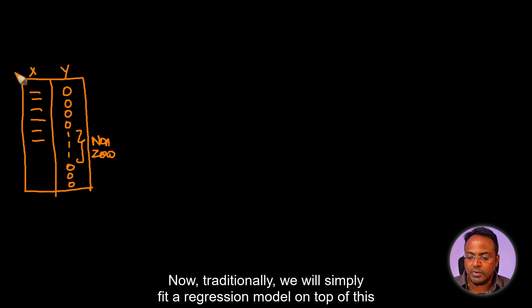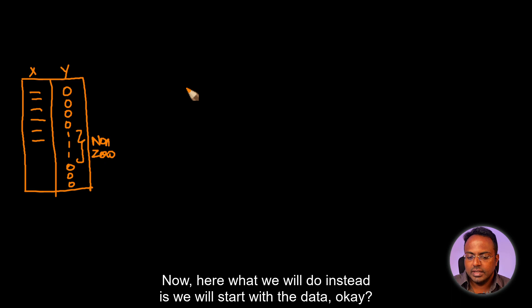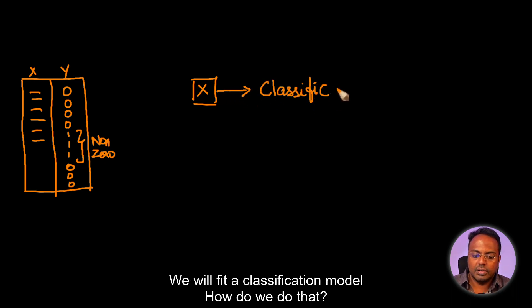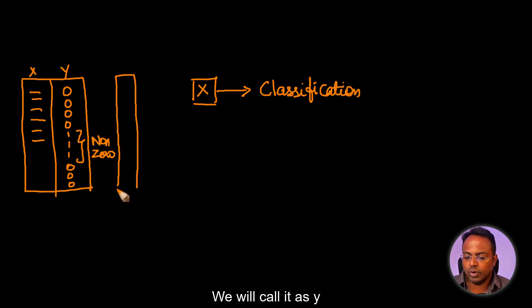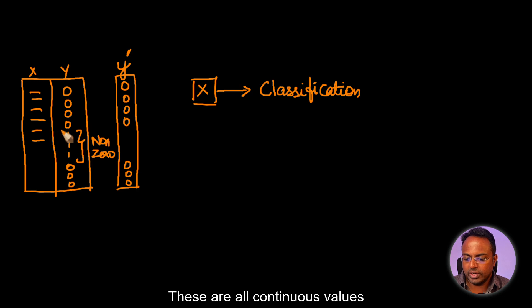Now, traditionally, we will simply fit a regression model on top of this and make the prediction for Y hat. Now here, what we will do instead is we will start with the data. We will start with the X. On top of this, instead of fitting a regression model, we will fit a classification model. We will create another Y, we will call it Y dash. This will contain zeros whenever Y equals zero. For Y, where it is non-zero, we will mark it as one.